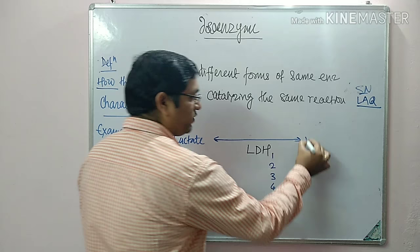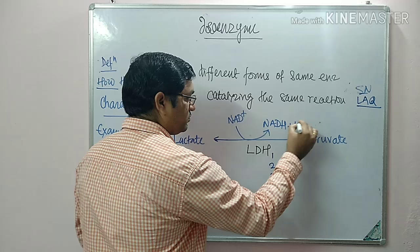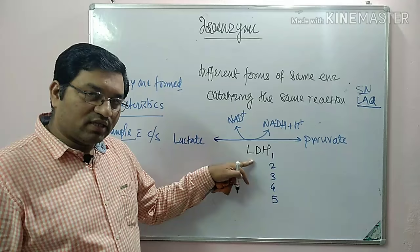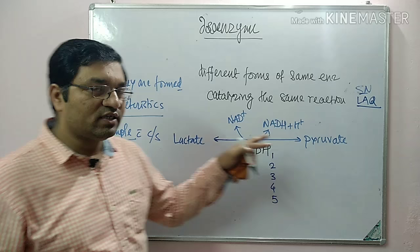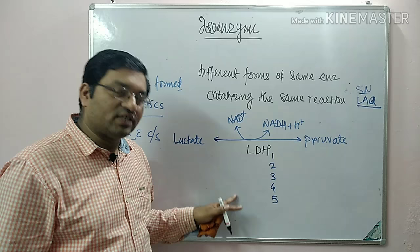NAD is required as a coenzyme and is converted into NADH. These are the different variants — the different isoenzymes of lactate dehydrogenase — all catalyzing the same reaction, that is conversion of lactate into pyruvate, but they differ in some properties, for example electrophoretic mobility. That's why they are known as isoenzymes.